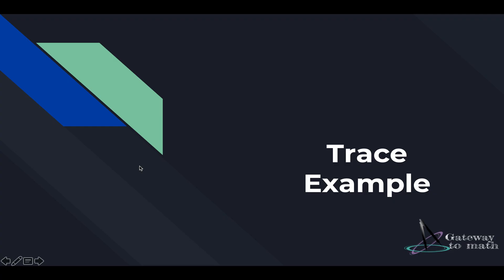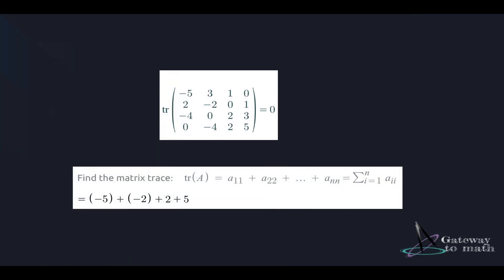Well hello everyone, in this session we will be discussing an example to understand trace of a matrix. So let's get started. Here we are given a matrix with the entries minus 5, 3, 1, 0, 2, minus 2, 0, 1, minus 4, 0, 2, 3, 0, minus 4, 2, and 5.